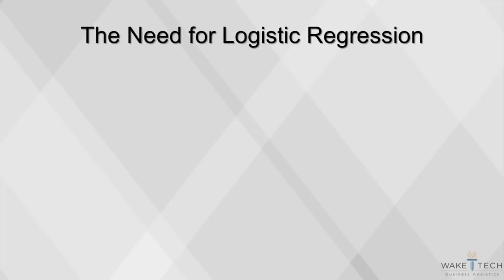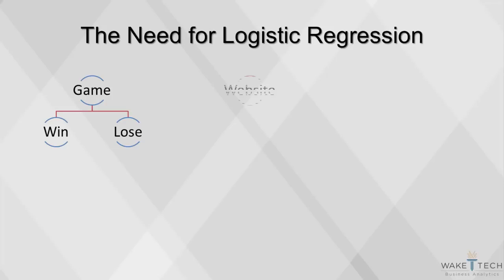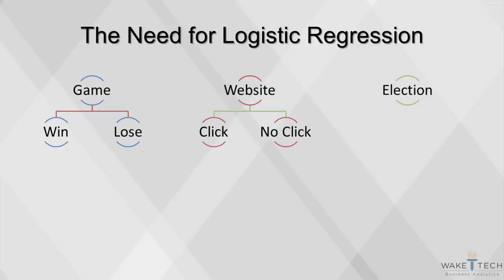In many instances when you are testing hypotheses and making predictions, you will have dichotomous outcomes. For example, in a game you can either win or lose. On a website, a user either clicks or does not click. In an election, a person votes for a candidate or does not.